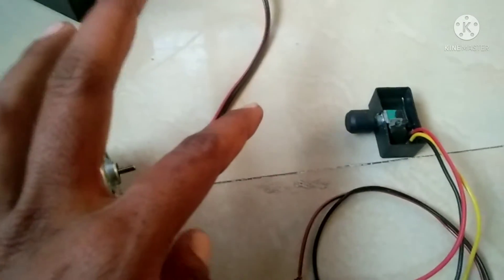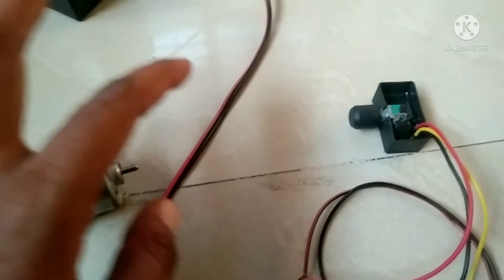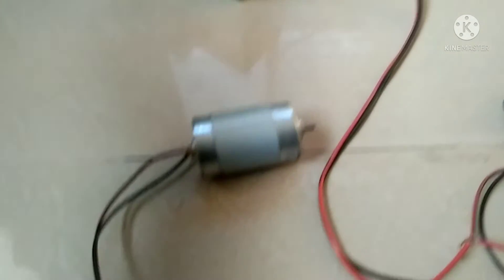The regulator has red and black wires. The motor also has red and black wires.